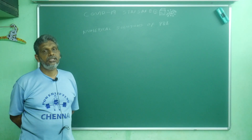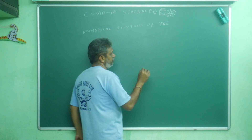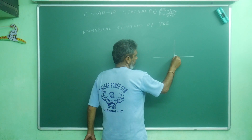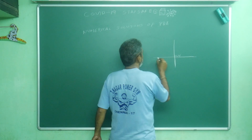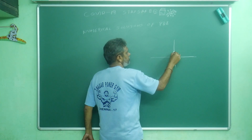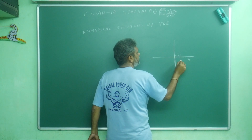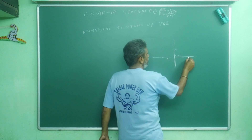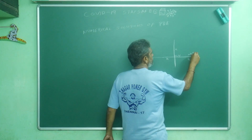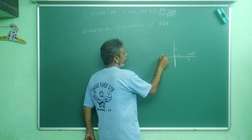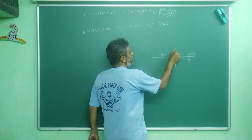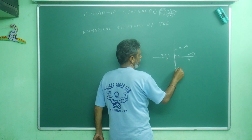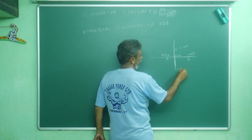Finite difference method deals with finding values at grid points. We are given boundary values, and we do a rectangular division of the domain. If you take a point (x, y), the x-direction has increment h and the y-direction has increment k. So neighboring points are (x+h, y), (x-h, y), (x, y+k), and (x, y-k).